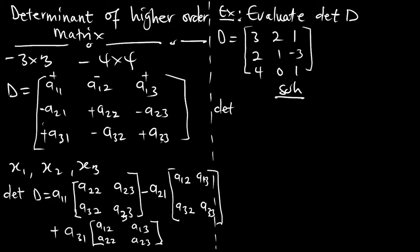Delta of D — I'm going to consider the first column. Using the first column, we assign the signs: plus, negative, plus. I'll pick the first one, which is positive 3. I'll cancel everything on that row and that column, leaving the sub-matrix: 1, negative 3, 0, 1. Then I'll pick negative 2. Cancel everything on the row and the column — that leaves the sub-matrix: 2, 1, 0, 1.